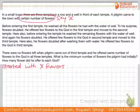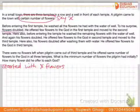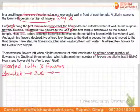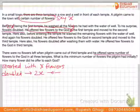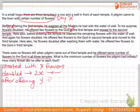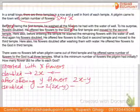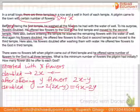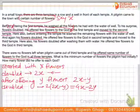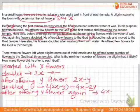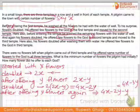He washed the flowers at the first well, so they doubled to 2x. He offered y flowers, leaving 2x − y. At the second well, flowers doubled again to 2(2x − y) = 4x − 2y. He offered y more flowers, leaving 4x − 2y − y = 4x − 3y.